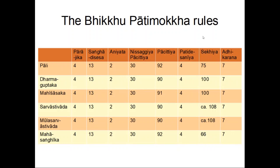The only class that varies between schools is the Sekhiyas — minor rules ranging from 66 in the Mahasanghika tradition to 75 in Pali and around 108 in others, with even intra-school variation of plus or minus ten rules. The Sekhiyas were very likely added and changed at a later time. But for the rest of the Bhikkhu Patimokkha, the situation is really quite ideal.